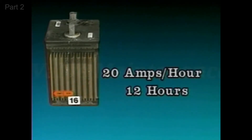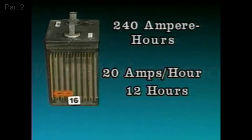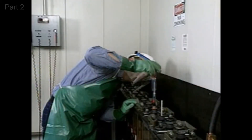On the other hand, if the load demands 20 amps, the cell can provide this current for 12 hours. This represents an ampere hour rating of 240. So the cell capacity is higher at lower discharge currents.